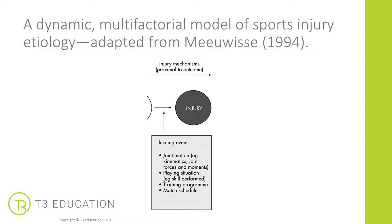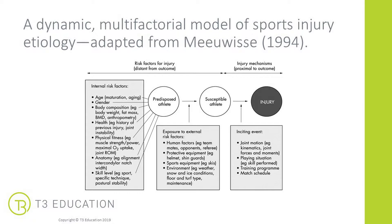The last part of the continuum covers the circumstances surrounding the event — the moment in time when an injury may occur. This includes joint motion, the athlete's range of movement at the time, the situation they're playing in, their training program, performance schedule, and match schedule. All of these inciting events can lead to injury, but only based on predisposing factors and what the athlete is susceptible to depending on location and training or playing conditions. The main takeaway is that there is not one single thing that causes an injury — it's often a combination of predisposed factors, external or indirect factors, and what's happening at that particular moment in time.